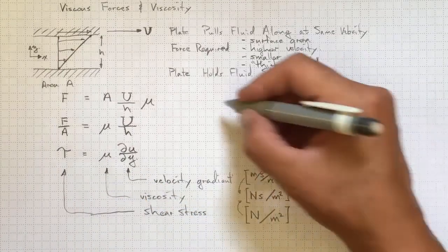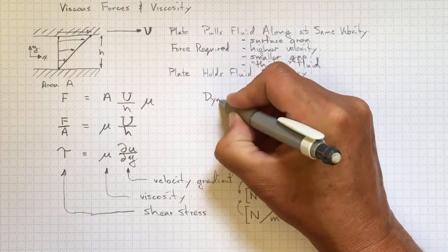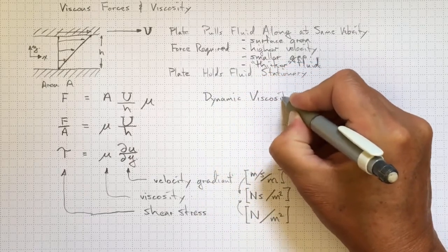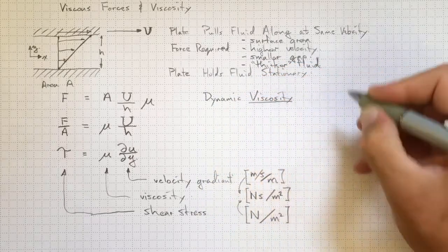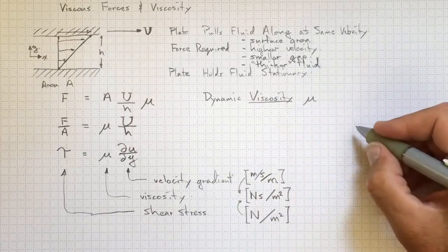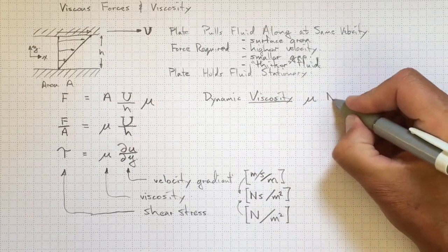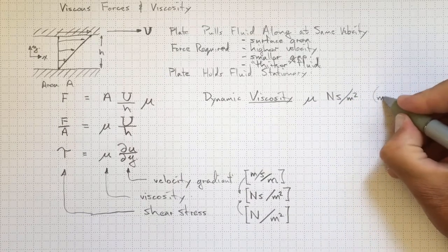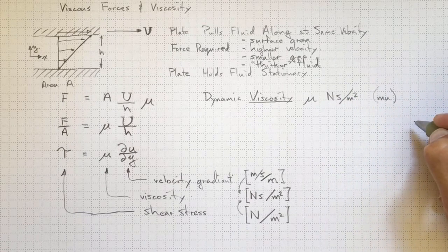So this viscosity here, this mu is referred to as the dynamic viscosity, or just viscosity. It has the symbol mu, a Greek letter, and it has units newton seconds per square meter.